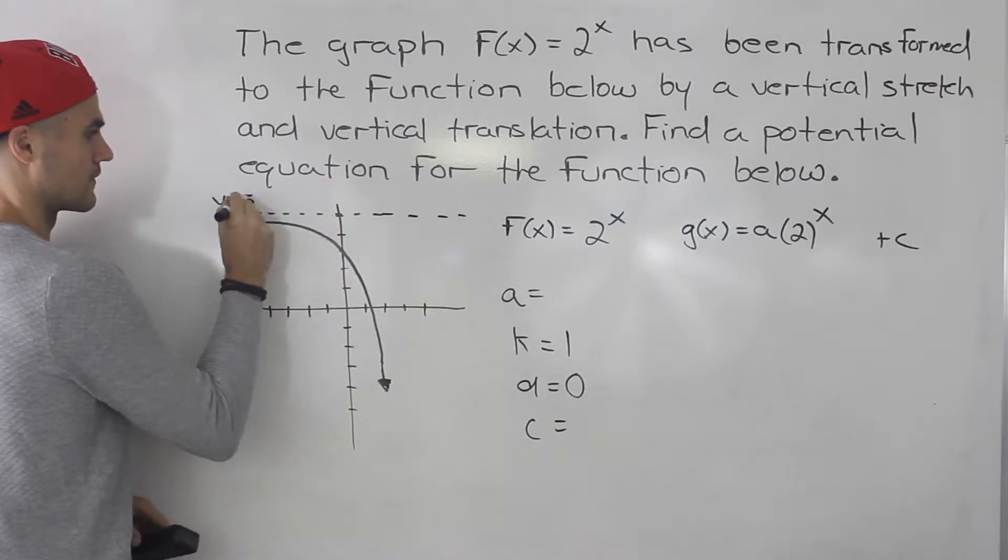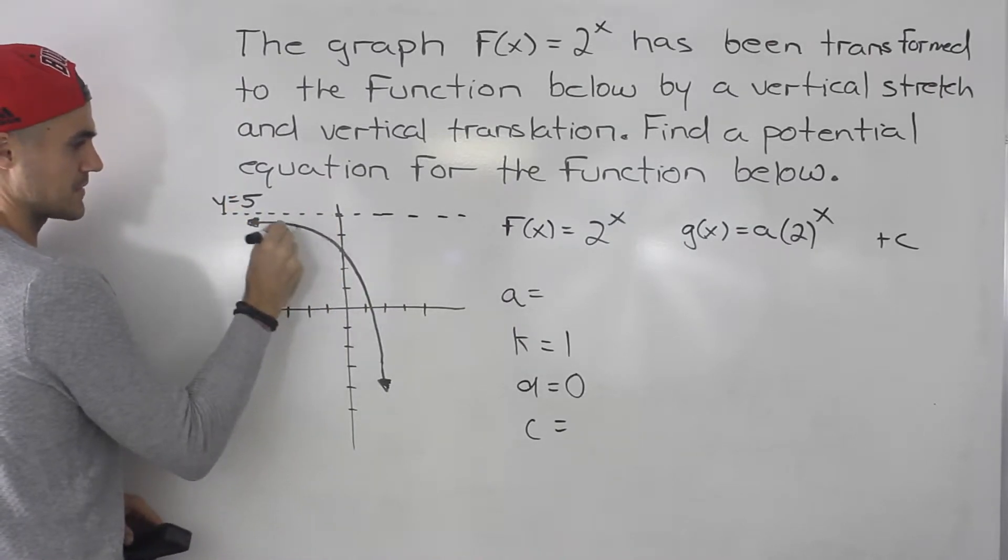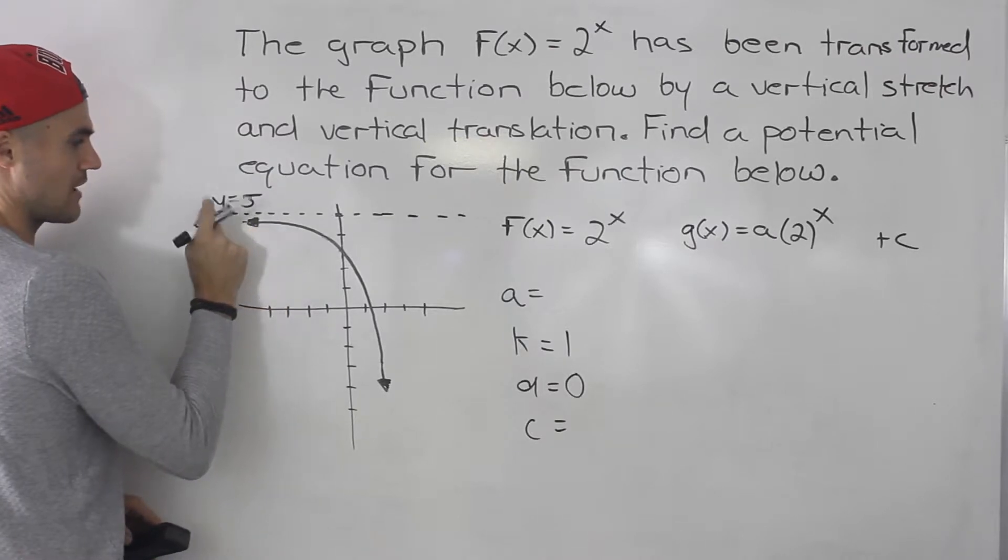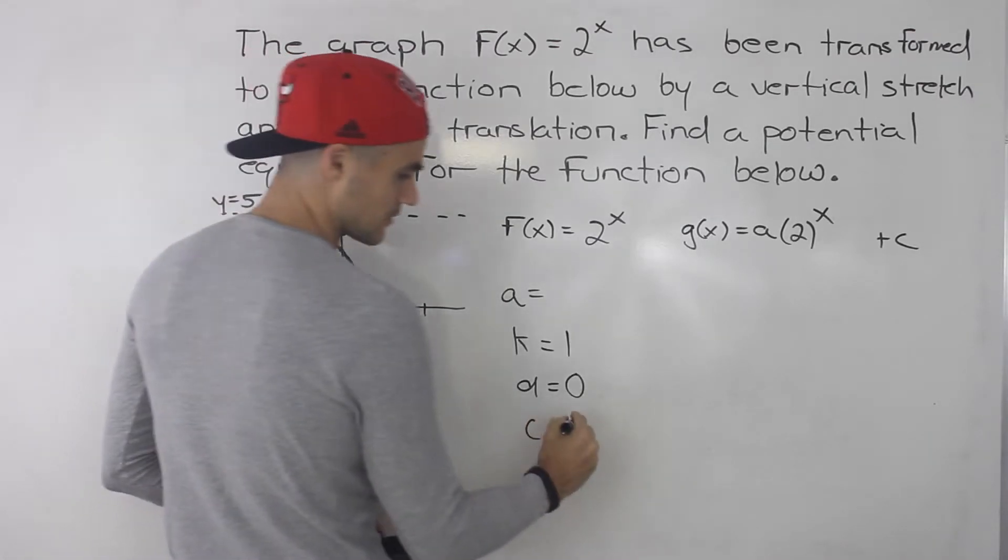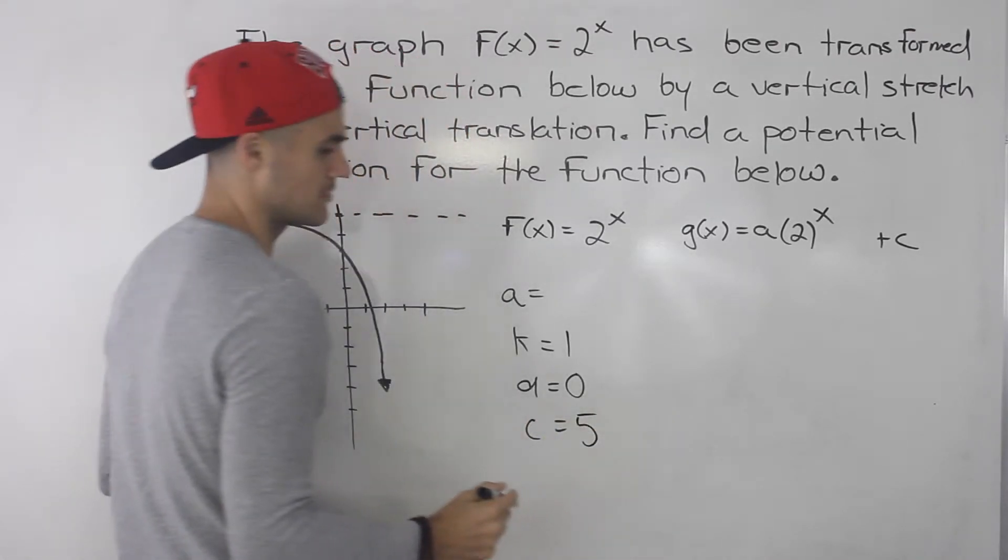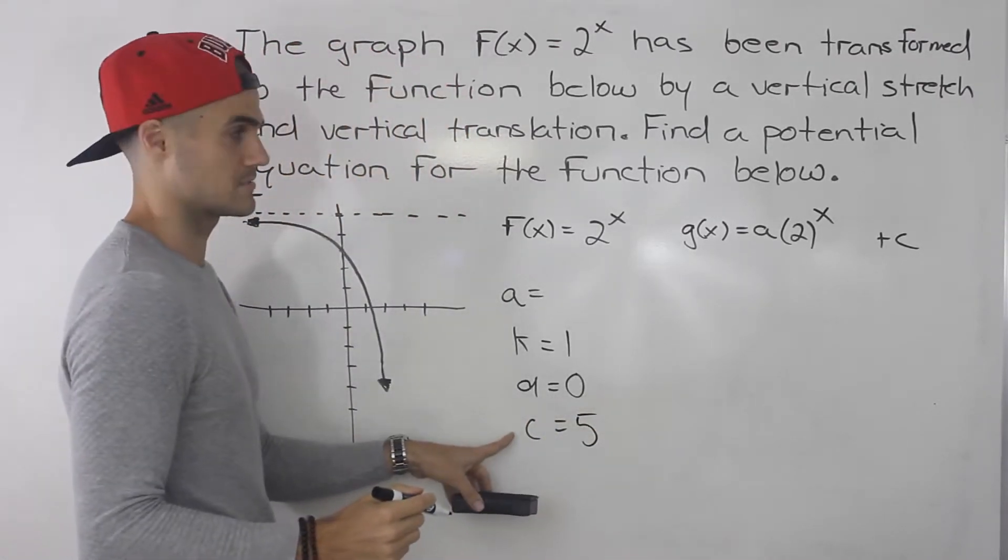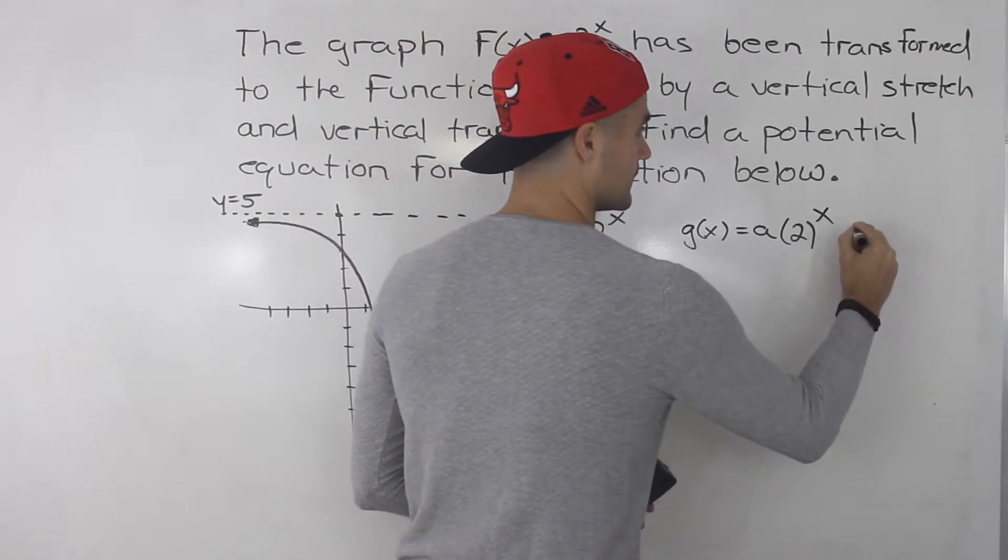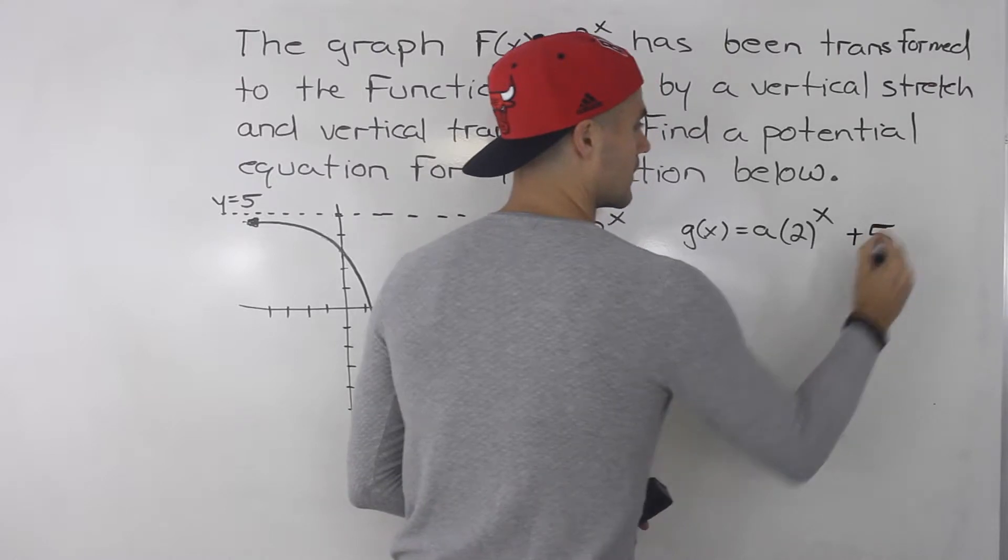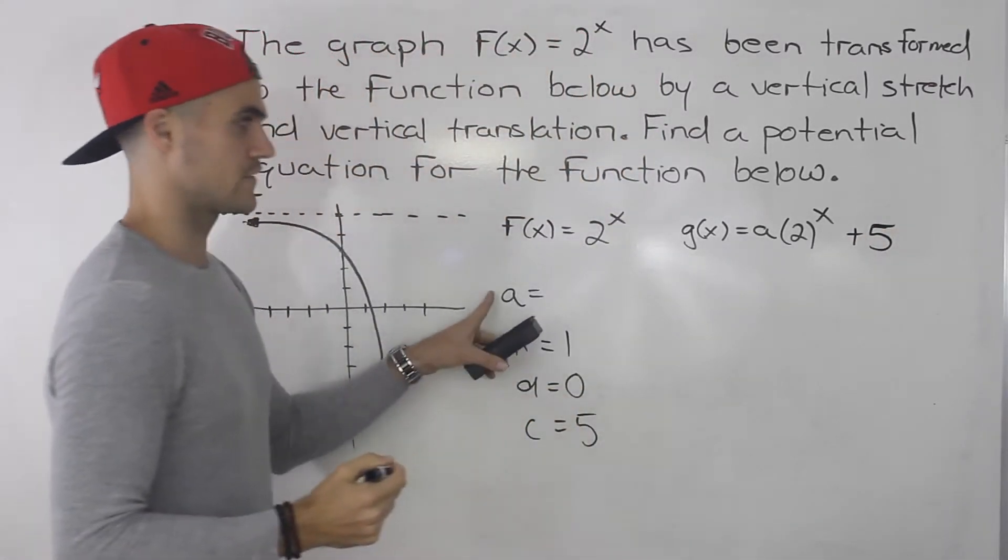Notice how this exponential function is approaching that y value of 5, but it's not quite hitting it. So we know the c value is going to be 5, or that's a very good estimate of it. So we could put plus 5 here. And now all we have to do is solve for this a value.